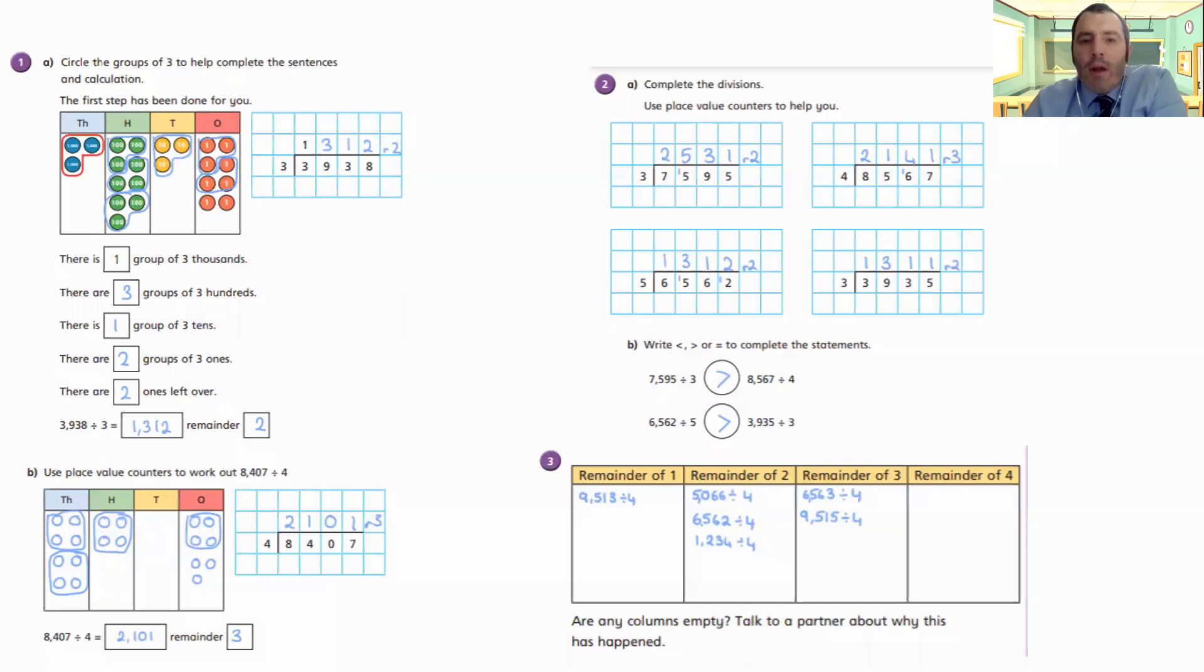Okay. Just looking at question three. Are any of the columns empty? Talk to a partner about why this has happened. Well, there's not going to be a remainder of four because we're dividing by four. Every single one of those questions is divided by four. As we know, we can't have a remainder that's equal to or greater than the number we're dividing by.